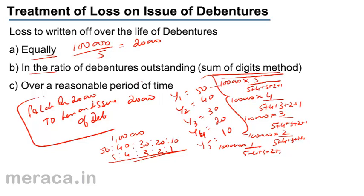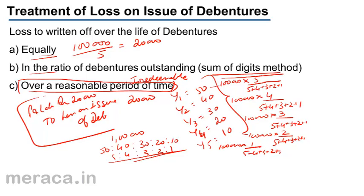If the debentures are irredeemable, then the loss on issue of debentures may be written off over a reasonable period of time, maybe over a period of 7 years or 10 years.